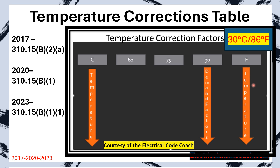Once we know we're in the right table, let's break it down. On the left-hand side we find the column in Celsius — if your ambient temperature is in degrees Celsius, start there. Across the top you'll see 60, 75, and 90 degrees C columns, which correspond with the 60, 75, and 90 degrees C columns of our starting ampacity table. On the right-hand side you'll find degrees Fahrenheit, used when your ambient temperature is listed in Fahrenheit.